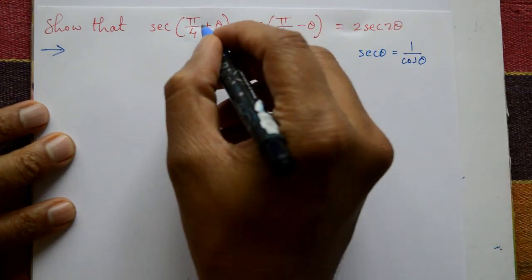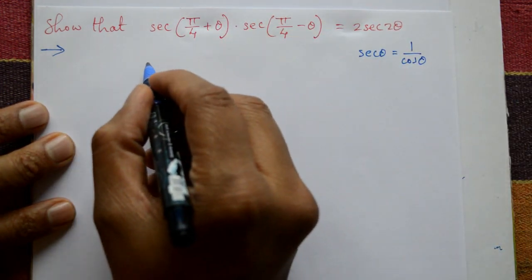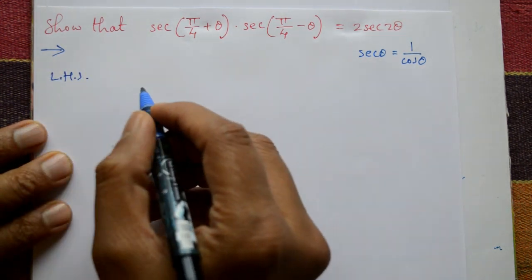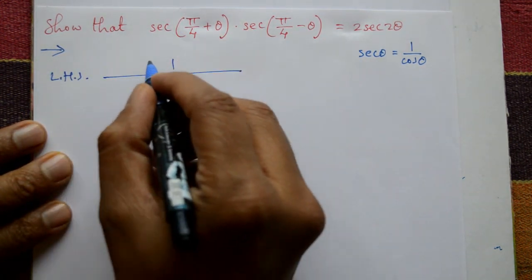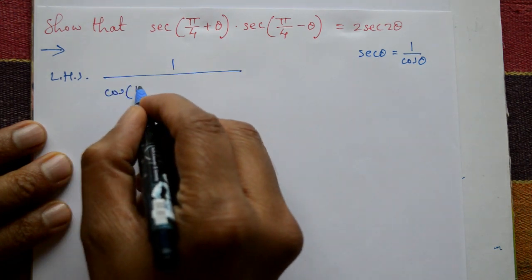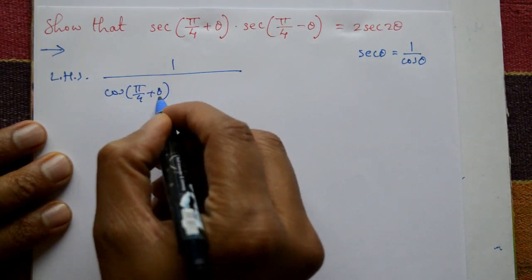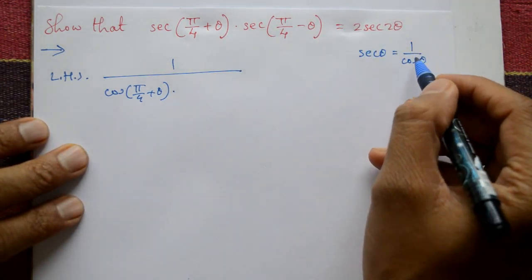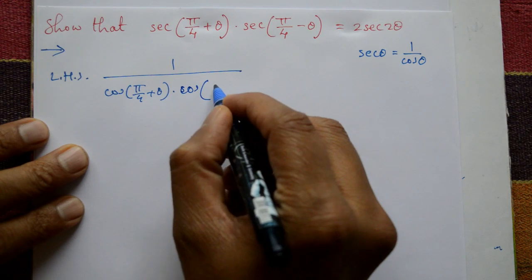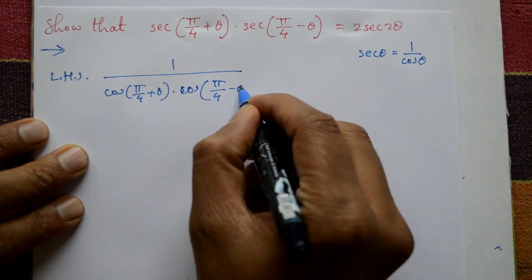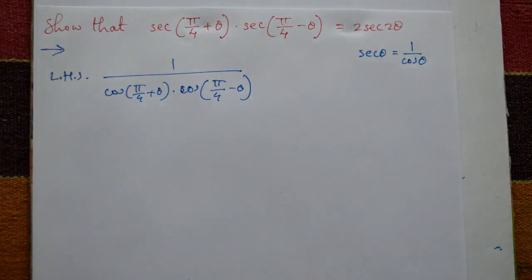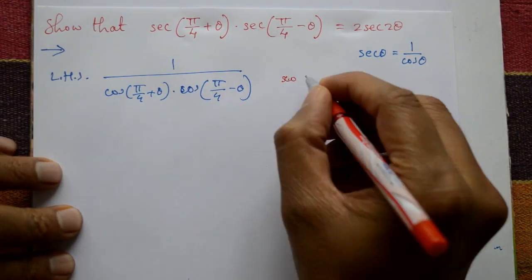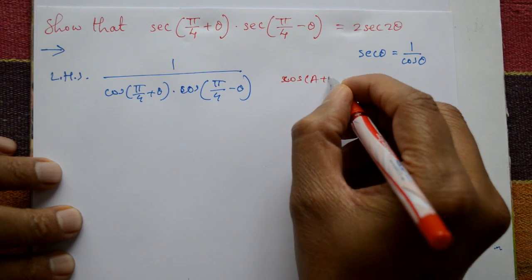Since secant θ is 1/cos θ, taking the left-hand side: 1/cos(π/4 + θ) into 1/cos(π/4 - θ). We will use the compound angle formula — cos(A + B) = cos A·cos B − sin A·sin B.